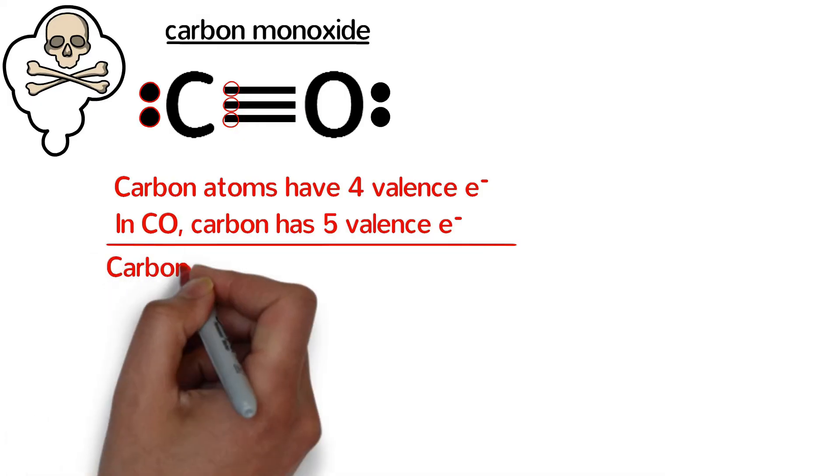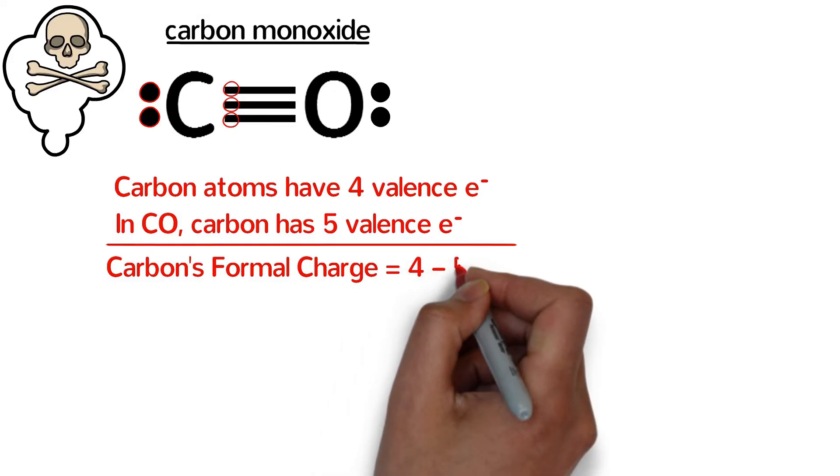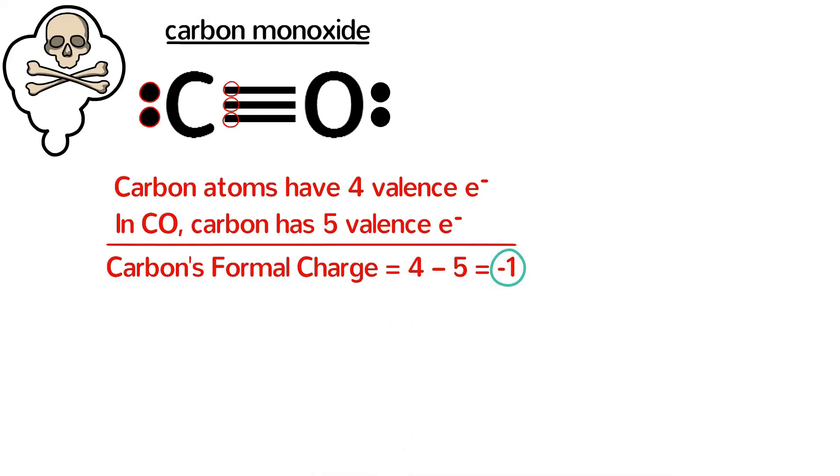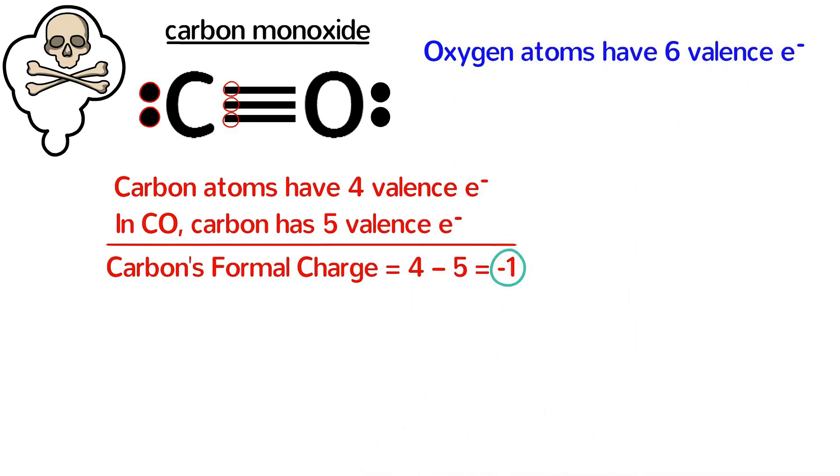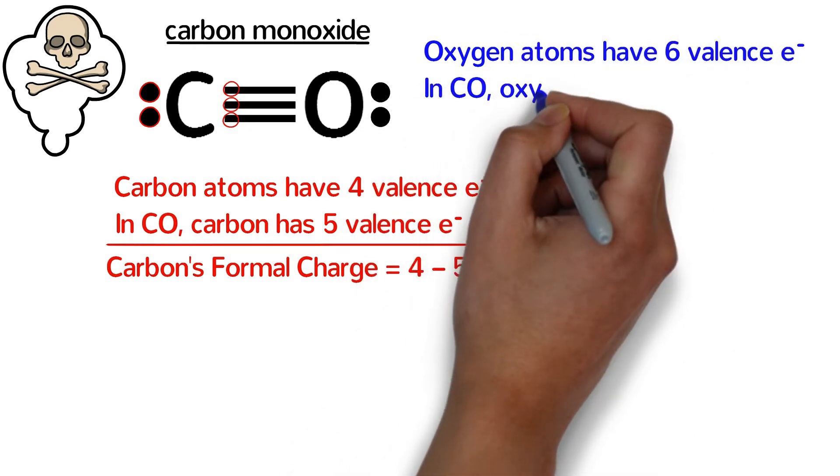Remember that we are counting one valence electron for each bond and one valence electron for each dot. That means that carbon has a formal charge of four minus five or negative one.